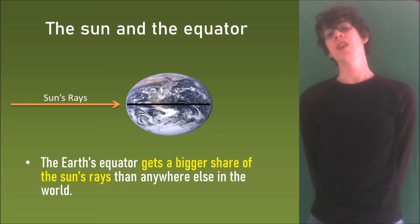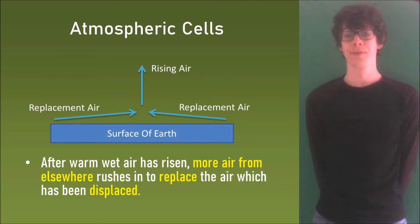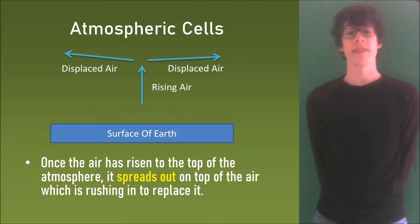Now the Earth's equator gets a bigger share of the sun rays than anywhere else in the world and I'm showing you this here. This means a large amount of moist air rises here. After warm wet air has risen more air from elsewhere rushes in to replace the air which has been displaced. Once the air has risen to the top of the atmosphere it spreads out on top of the air which is rushing to replace it.